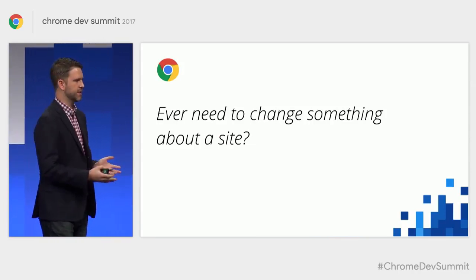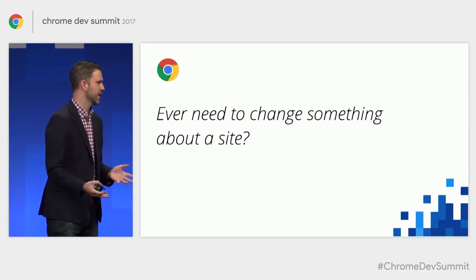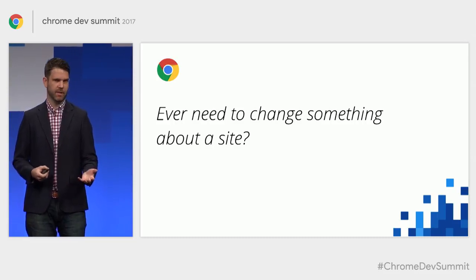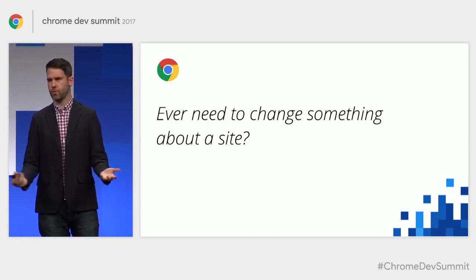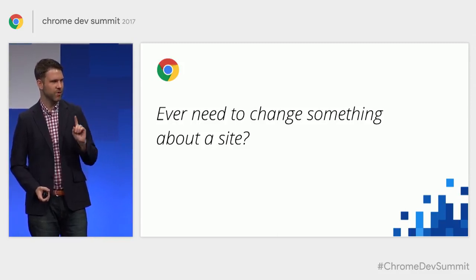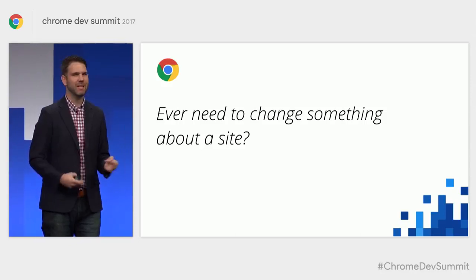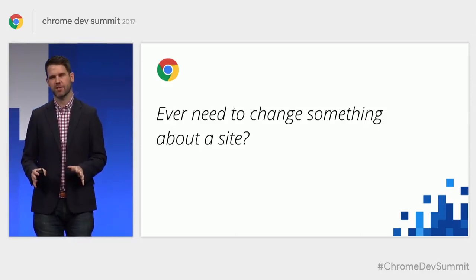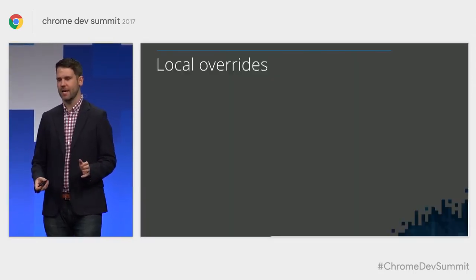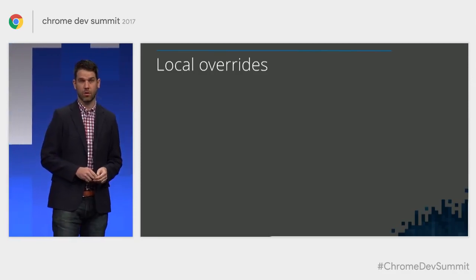Have you ever been in the situation where you need to change something about a site, but it's not your site — you're not running the dev server, for instance? You open up DevTools, you can change anything, but if you have to reload the page, it's gone. You wanted to change something about the JavaScript and the way that it starts, but how do you do that? It's painful. So I want to show you a brand new feature we're calling local overrides.